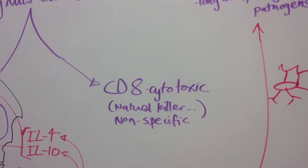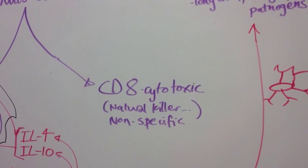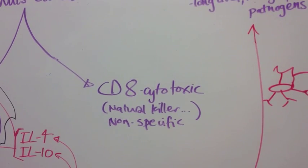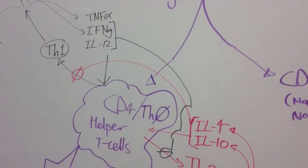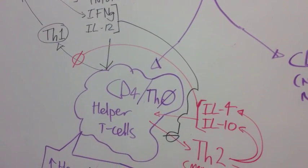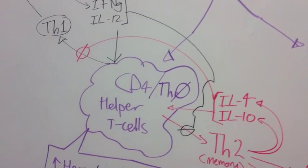CD8 are cytotoxic cells that are non-specific to a pathogen such as natural killers. CD4 cells are also called TH0 cells. These are helper T cells.